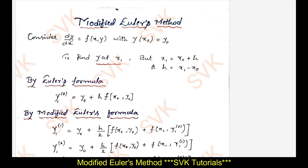Consider any differential equation like dy/dx equal to a function of x and y, with the initial condition y(x₀) equal to y₀. We need to find y at x₁, where x₁ is given by x₀ plus h, and h is the step size. By Euler's formula, y₁⁽⁰⁾ is equal to y₀ plus h times f(x₀, y₀).